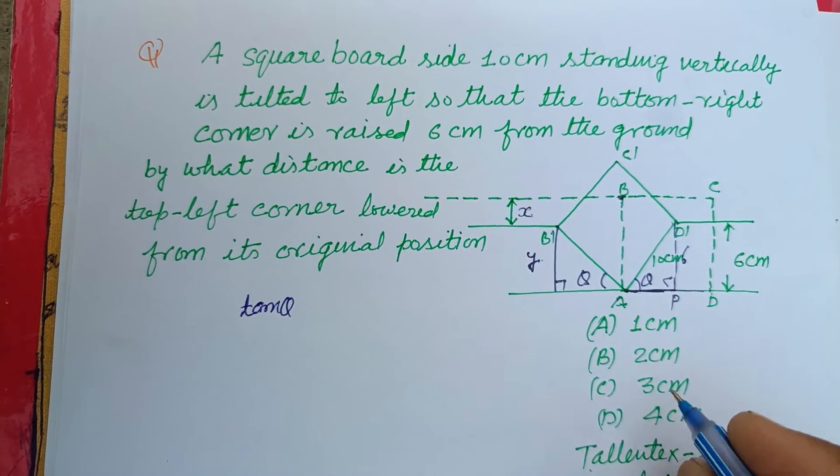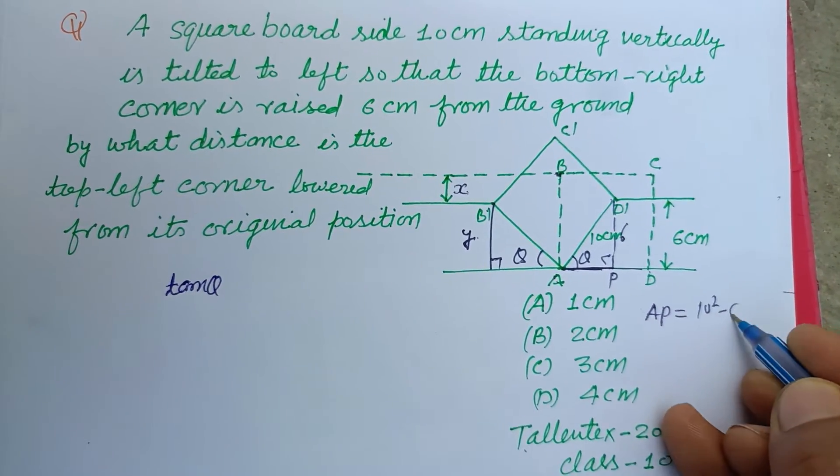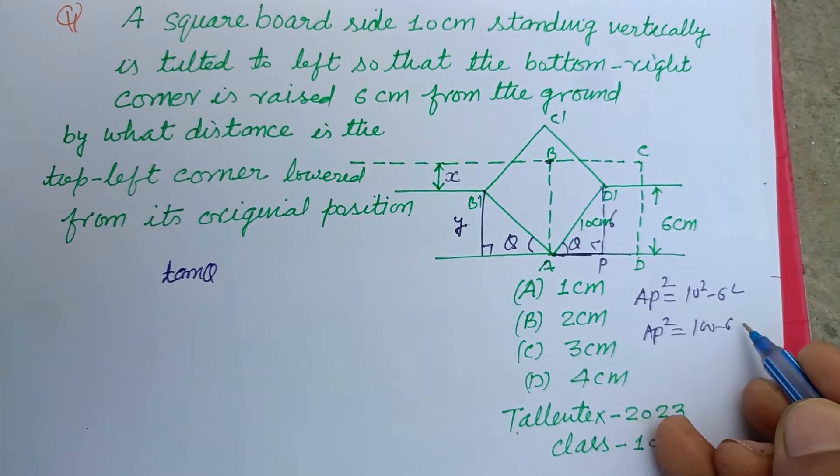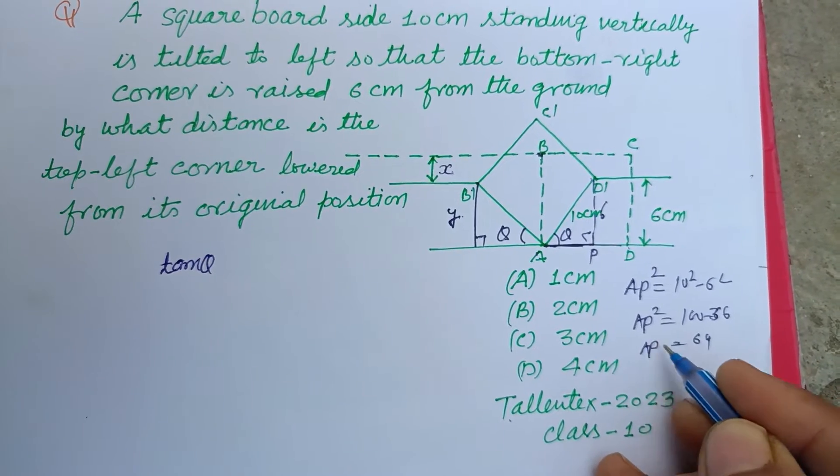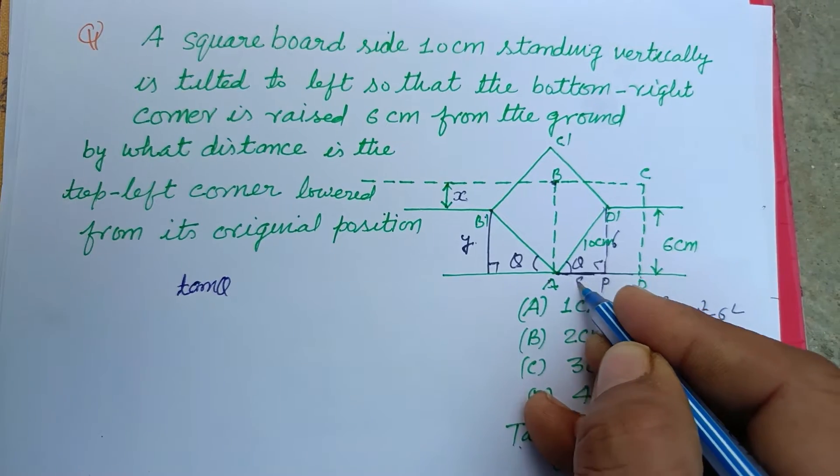10 square minus 6 square. So AP square equals 100 minus 36, this is 64. So AP equals how much? 8 centimeter. So this is 8 centimeter. So tan theta equals 6 upon 8.